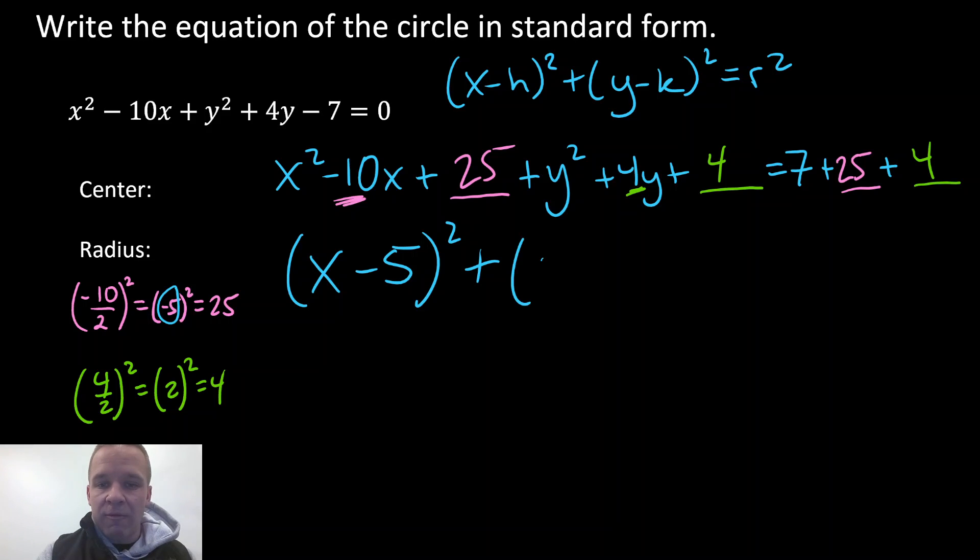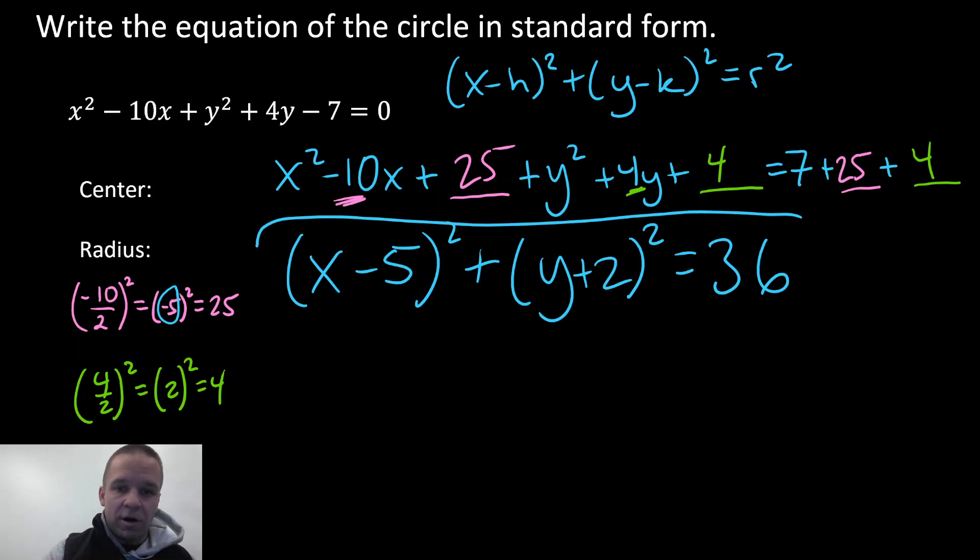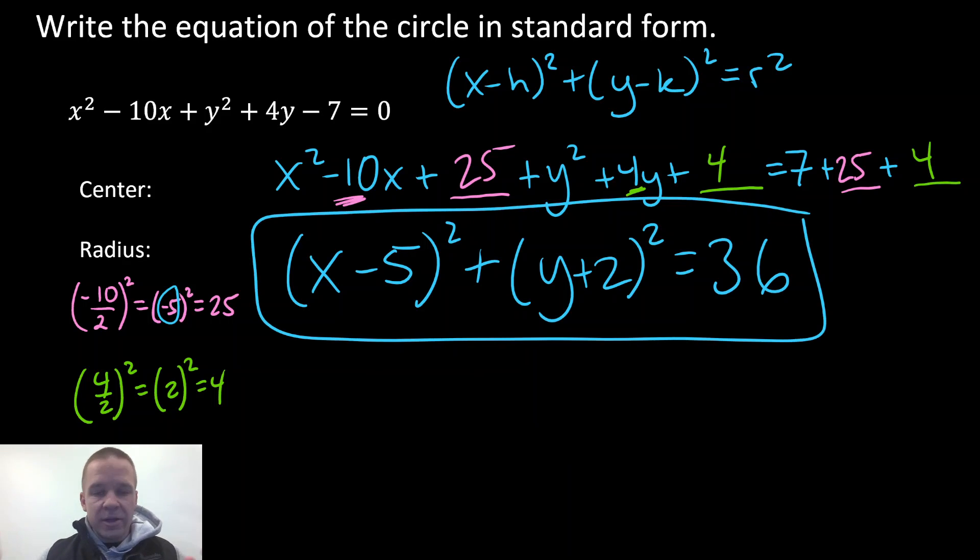For the next one, I'm gonna have Y plus two quantity squared, and then over on the right-hand side we have seven plus 25 plus four, that's gonna add up to 36. So from this, which is my standard form, what it asked for, there's my standard form.